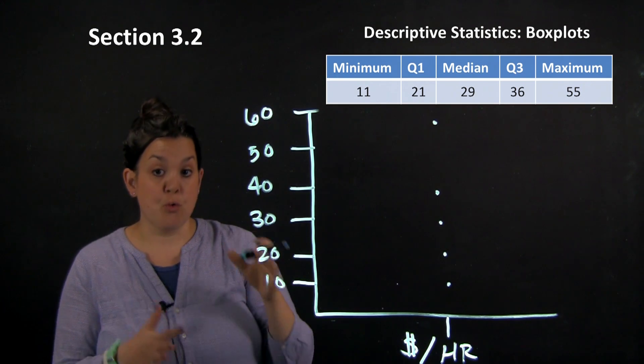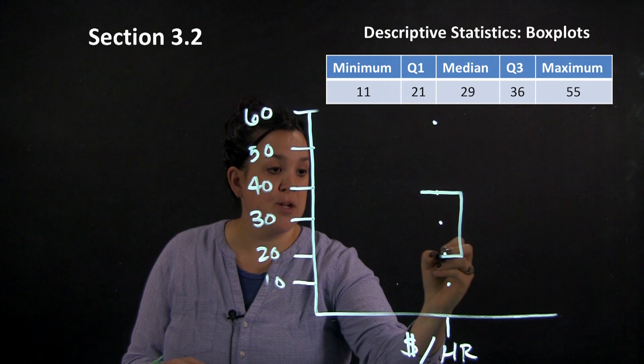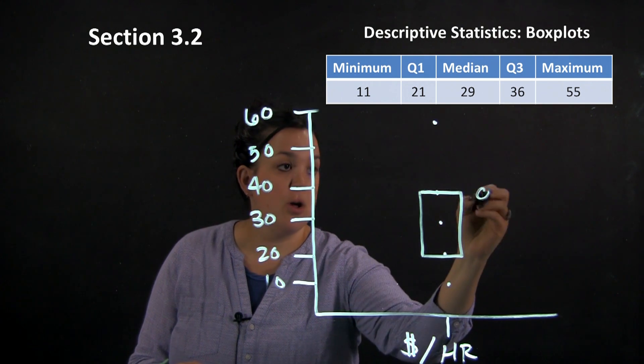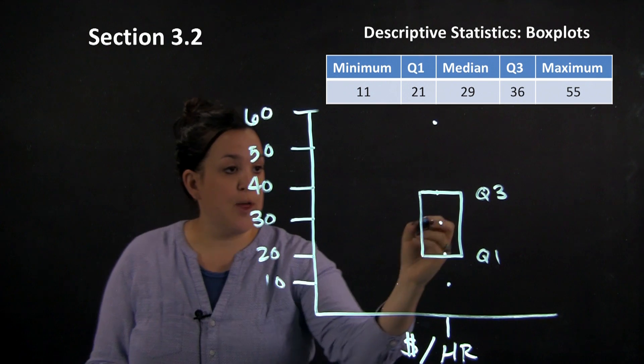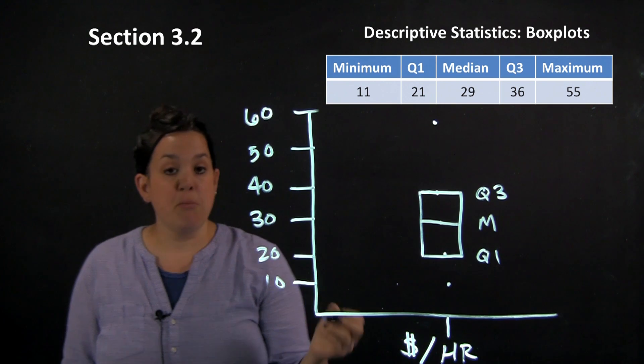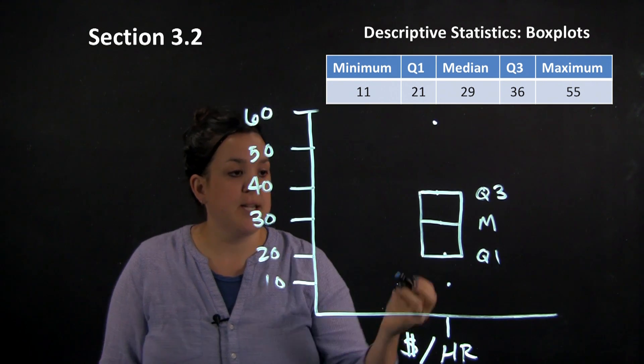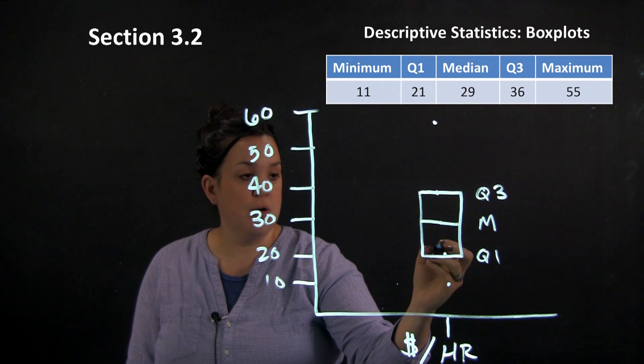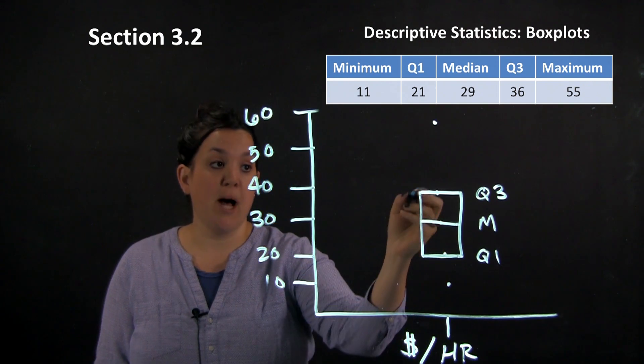So when you actually create the box plot the box itself is going to be made up of Q3 and Q1. So then the line dissecting the box is the median. So remember from the lecture that we had in section 3.1 a lot of times median is just shortened to a capital M. So that's the physical box of the box plot.